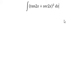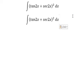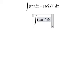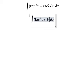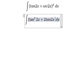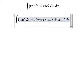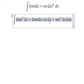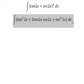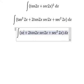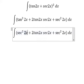We need to expand this one. We have tan²2x plus 2tan2x sec2x plus sec²2x. Next, tan²2x we change into sec²2x minus 1.